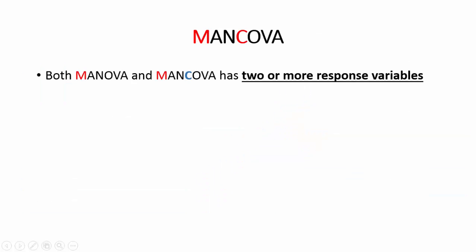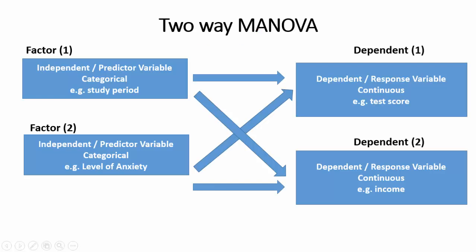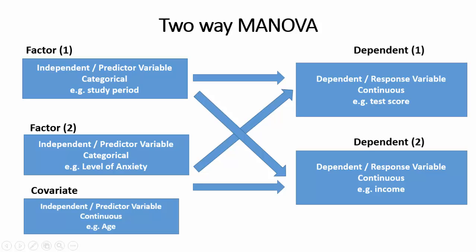Now we reach the final station in our quick tour: MANCOVA. Both MANOVA and MANCOVA have two or more response variables. This is a previously discussed MANOVA example. However, adding a covariate to the mix converts MANOVA into MANCOVA.